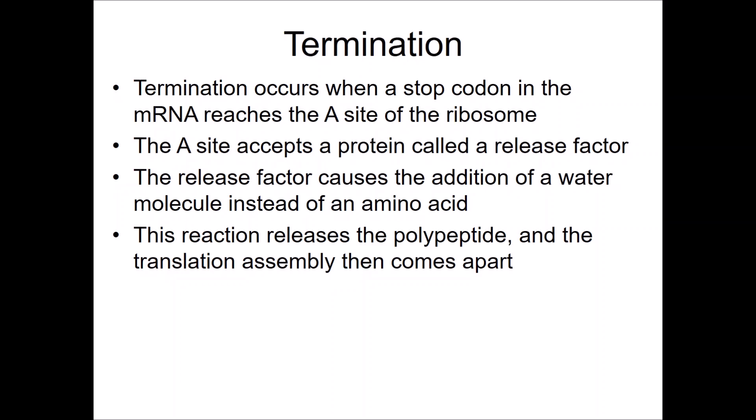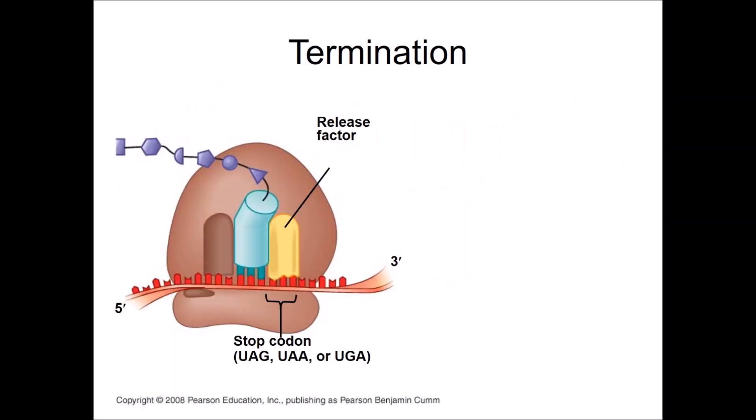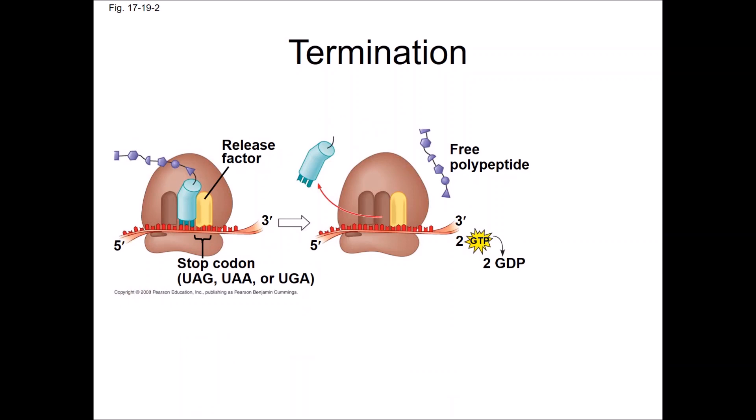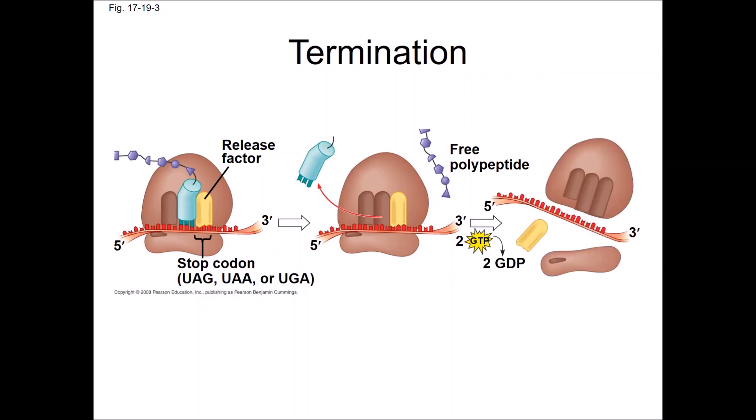Termination occurs when a stop codon in the mRNA reaches the A site of the ribosome. The A site will accept a protein called a release factor. The release factor causes the addition of a water molecule instead of an amino acid to the growing polypeptide chain, which releases the polypeptide, and the translation assembly then comes apart. There is no tRNA that matches a stop codon. The release factor protein, which is shaped like a tRNA, enters the A site and triggers the release of the polypeptide from the peptidyl tRNA and the release of this last tRNA from the ribosome, triggering disassembly of the ribosome from the mRNA.